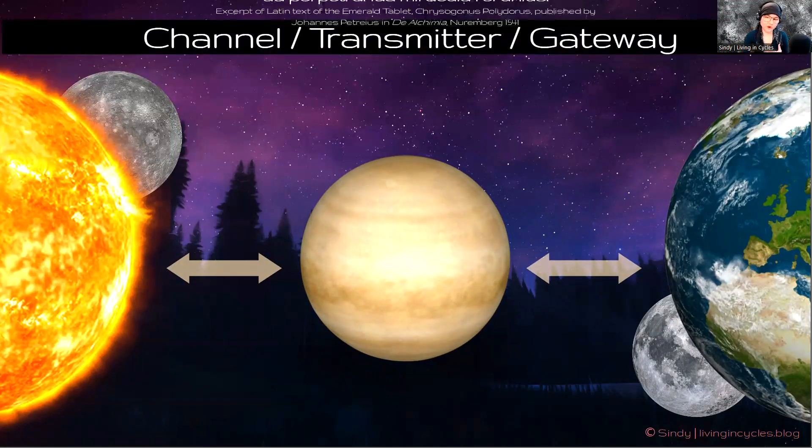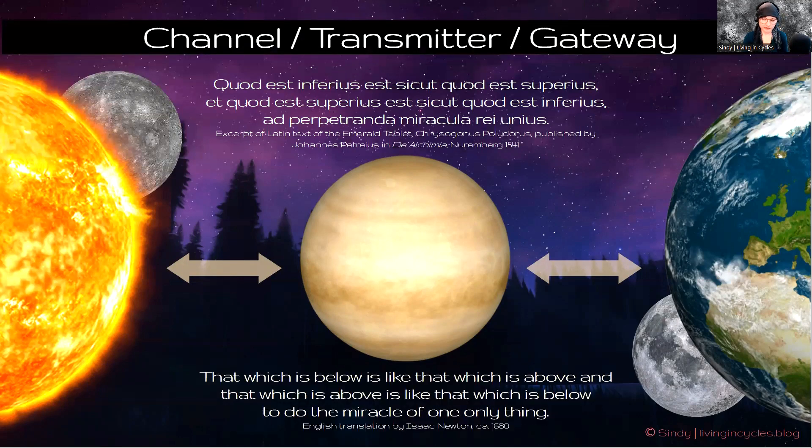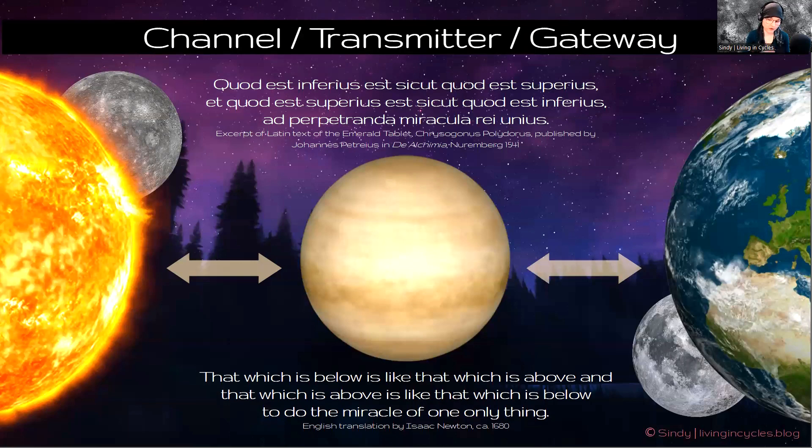You might know this quote from the Emerald Tablet, the Tabula Smaragdina. I have taken one English translation, the one from Isaac Newton. There are several translations. I will read this one. That which is below is like that which is above. And that which is above is like that which is below. To do the miracle of one only thing.